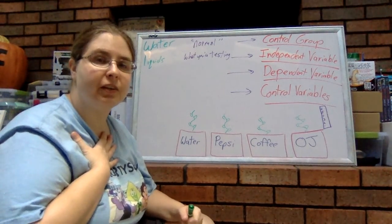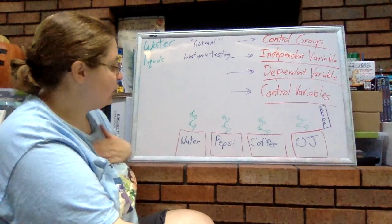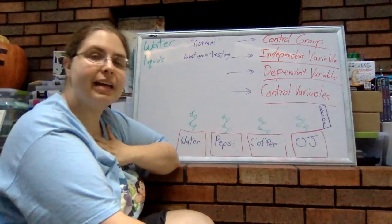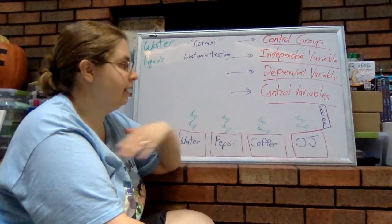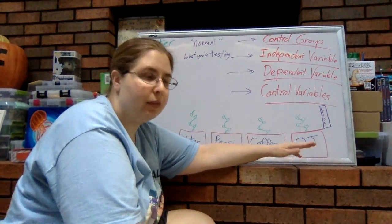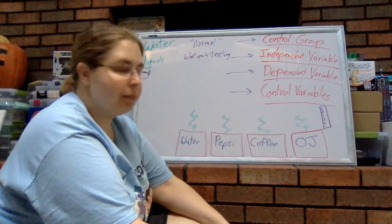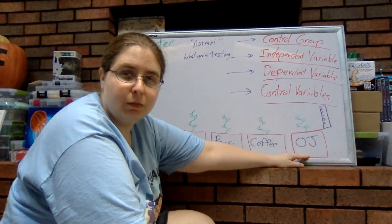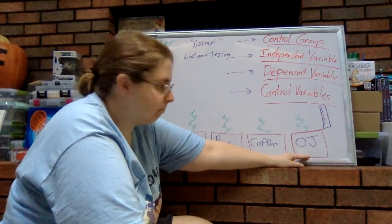I, as the experimenter, am testing what I'm doing differently. I am choosing to give one plant water, one plant Pepsi to test how the Pepsi will affect the plant, one plant coffee to test how the coffee will affect it, and one plant orange juice to see how that affects it. My hypothesis is that the orange juice plant will grow the best. In an if-then statement: if I give a plant orange juice, then it will grow taller.